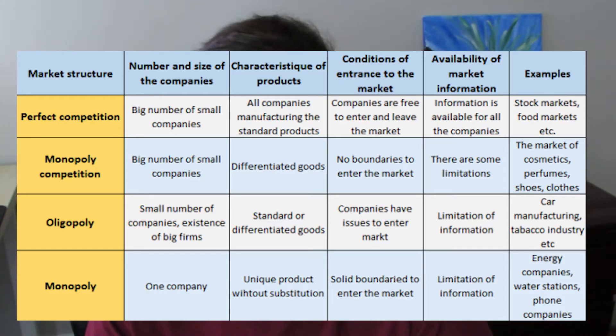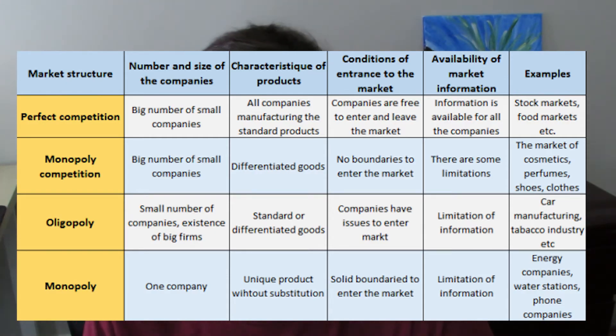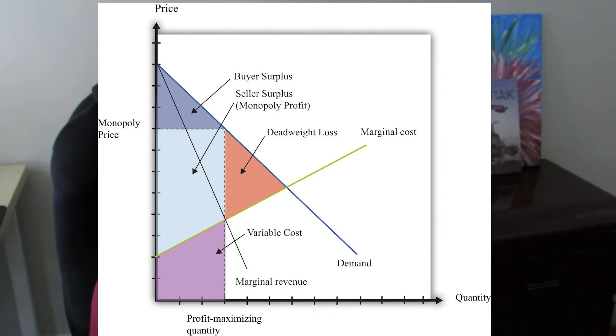I would also make sure to know the four different market structures, as well as their graphs and the properties of each graph — for example, identify the deadweight loss of a monopoly, or just various things like that. Especially for micro, be very comfortable working with tables, because you are definitely going to work with a table at some point — either to find the quantity where marginal cost equals marginal revenue, or to find the quantity where marginal resource price equals marginal resource cost if you're dealing with the labor market. Being comfortable and practicing with that data is going to be very important for you to do well on this exam.